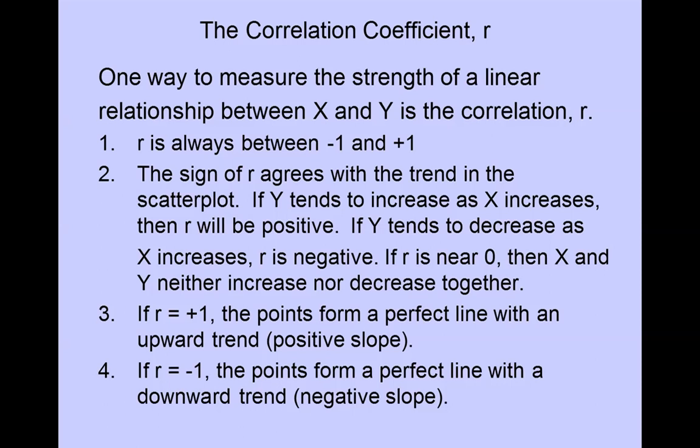The way the correlation is calculated, r is always between negative 1 and positive 1. The sign of r, whether it's negative or positive, agrees with the trend in the scatter plot. So if y tends to increase as x increases then r will be positive. If y tends to decrease as x increases then r is negative. And when r is near zero that indicates that x and y neither tend to increase or decrease together.